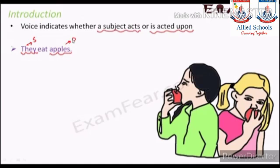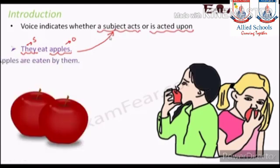The doer of any action is called the subject, and the receiver of any action is called the object. When we make the passive of 'They ate apples,' we first put the object — apples — then the helping verb 'are,' then the third form 'eaten,' then add 'by,' and finally the subject, which changes from 'they' to 'them.'